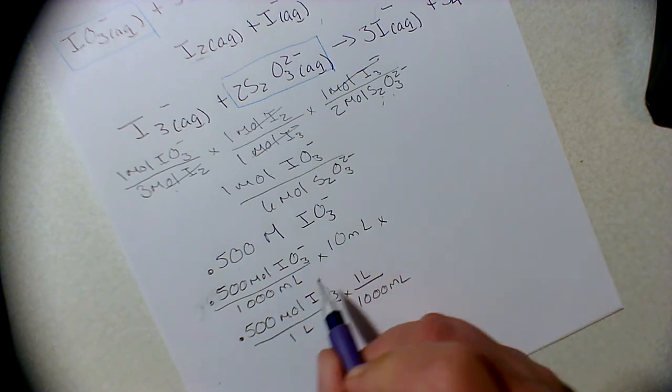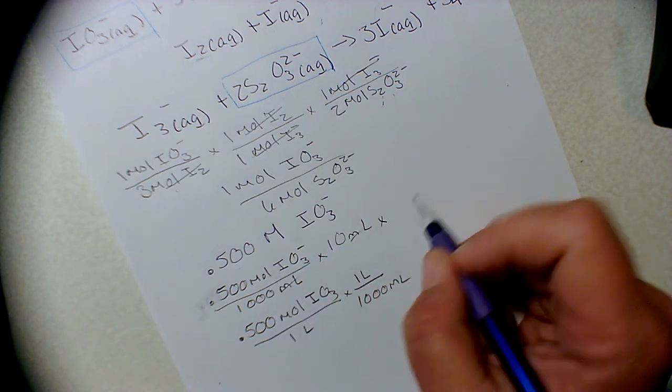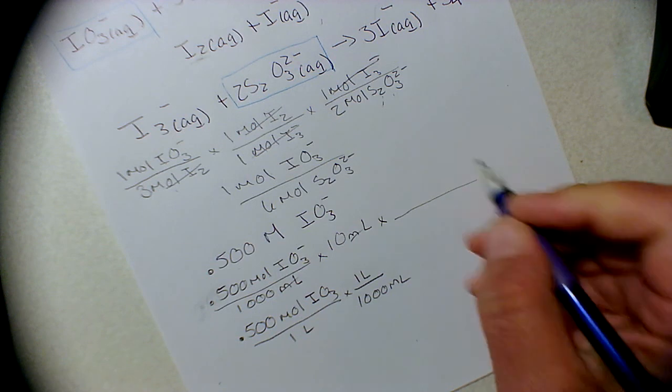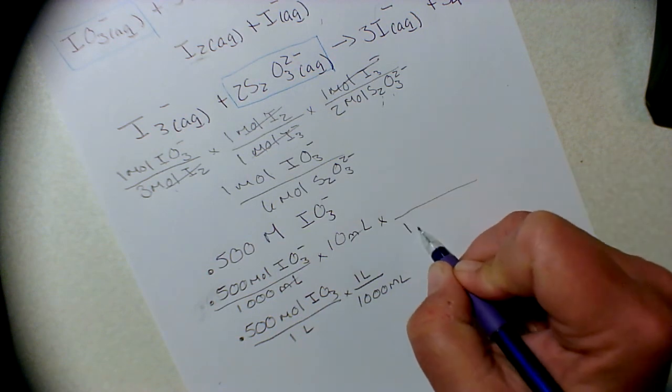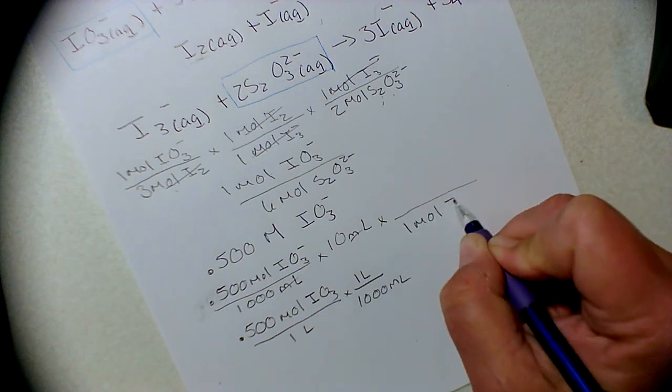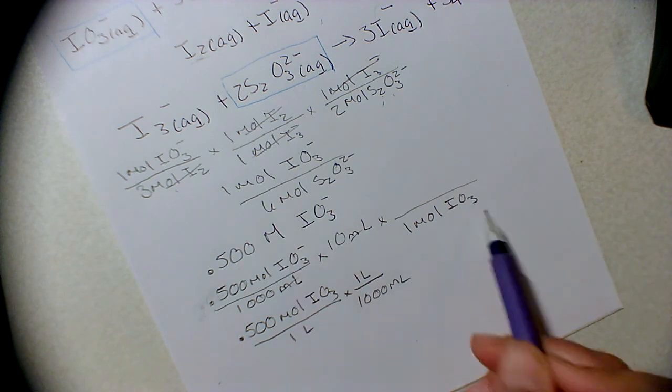Now I have moles, my volumes cancel out, I can use my mole-to-mole ratio, and it is the one mole IO3, it's got to go on the bottom so they cancel out.